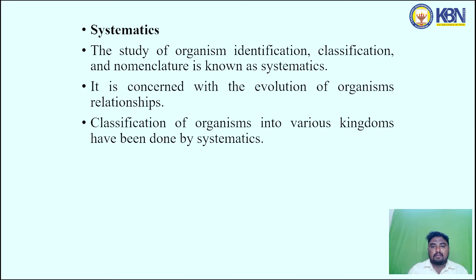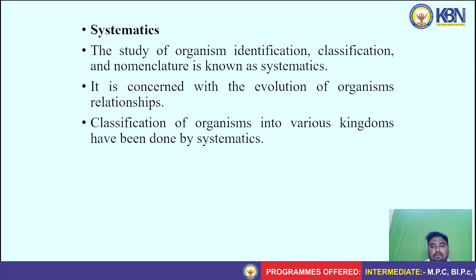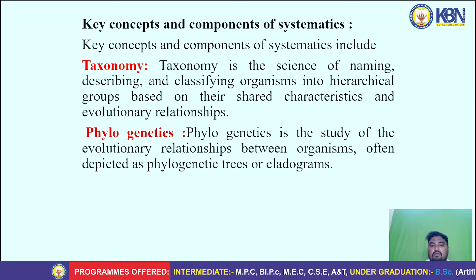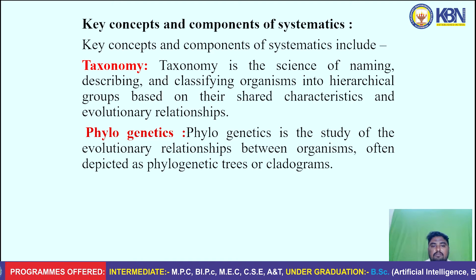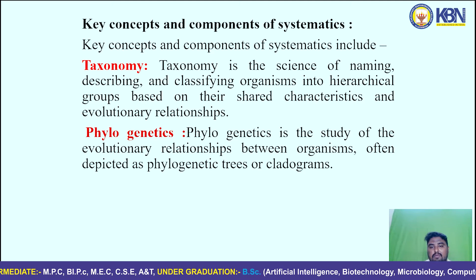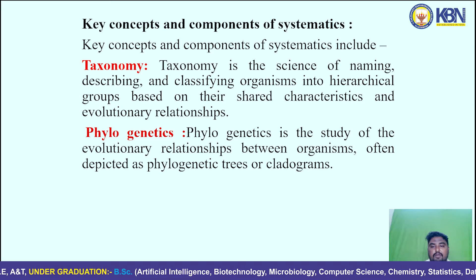The identification, classification and nomenclature of organisms is known as systematics. It is concerned with the evaluation of organism relationships. The classification of organisms into various kingdoms has been done by systematics. The key concepts and components of systematics include taxonomy — the science of naming, describing and classifying organisms into hierarchical groups based on shared characteristics and evolutionary relationships.